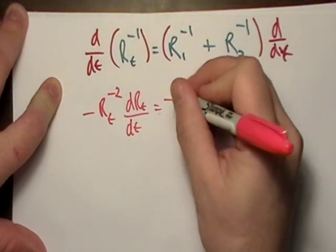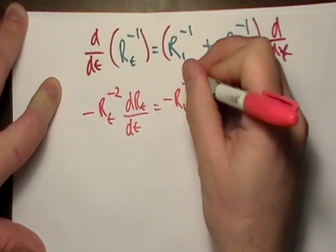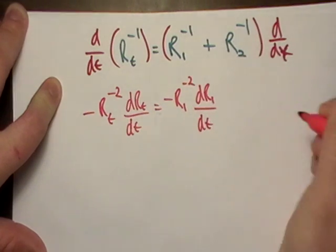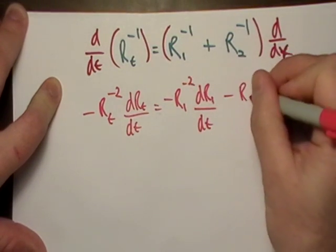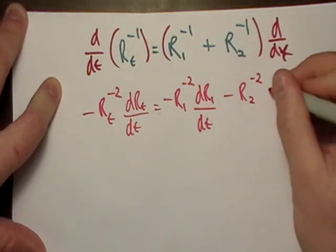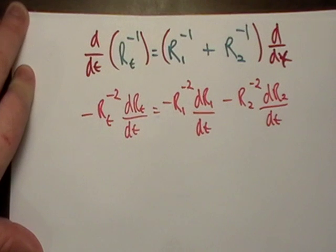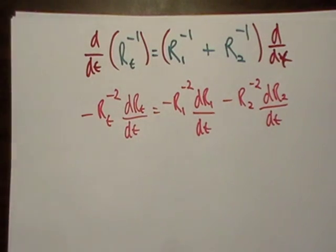Same thing here. I'm just going to go negative R1 negative 2 times the derivative of R1, RT, all the way down the line. They're all going to look like that. Implicit differentiation. We have that right there. Now we can go ahead and fill in some pieces of information.